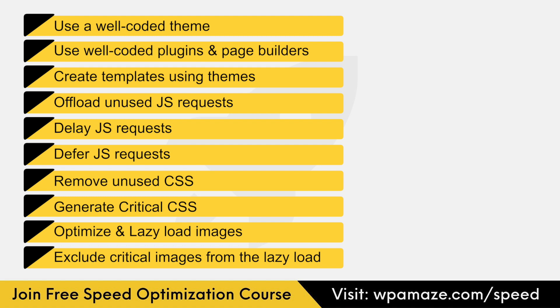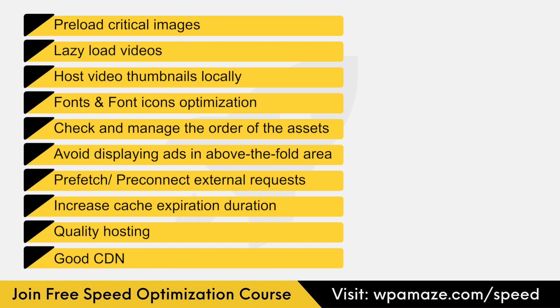Here I'll list how LCP can be improved, and in upcoming videos I'll cover the individual points in detail: use a well-coded theme; use well-coded plugins; create header, footer, single post, post archive, single product template, product archive, search page, etc. using a theme instead of page builders such as Elementor; offload unused JS requests; delay JS requests; defer JS requests; remove unused CSS; generate critical CSS; compress images and load them in WebP format; lazy load non-critical images; preload critical images; lazy load videos; host video thumbnails locally; optimize fonts and font icons; check and manage the order of assets; avoid displaying ads in the above-the-fold area; pre-fetch or pre-connect third-party or external requests; increase cache expiration duration; use a quality host and a good CDN.